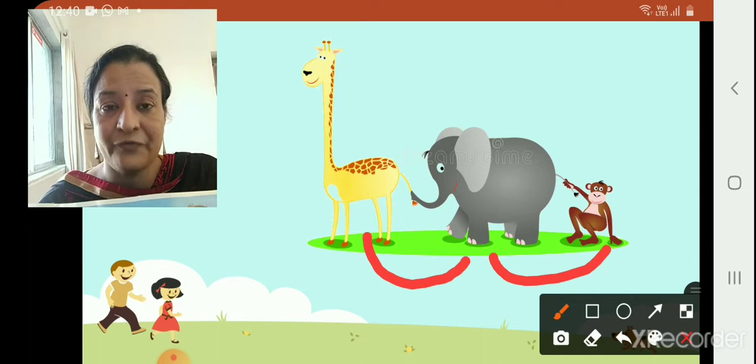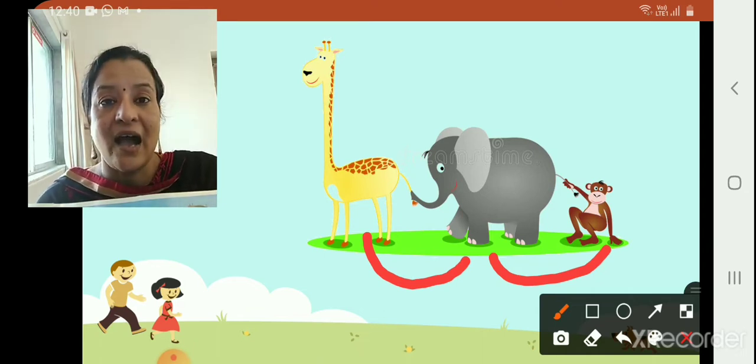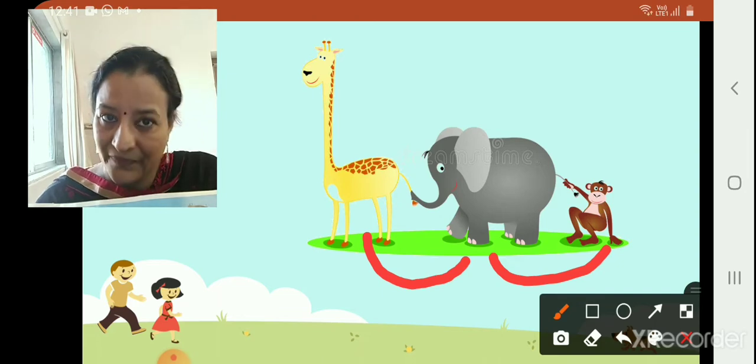So now children, you know that we are moving from left to right. After giraffe, elephant. After elephant, monkey. So move from left to right is after, badme.